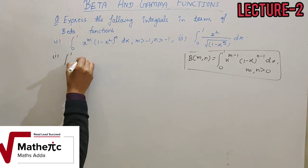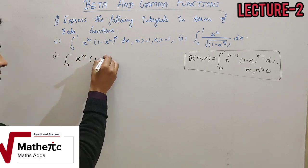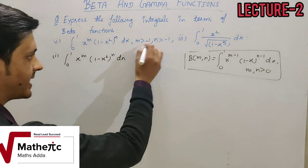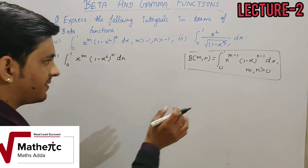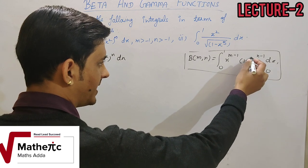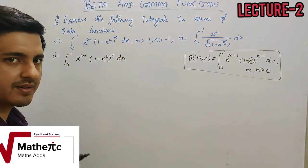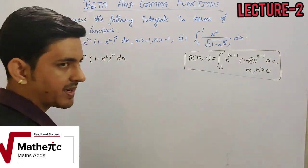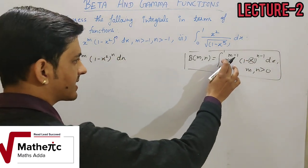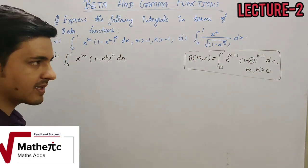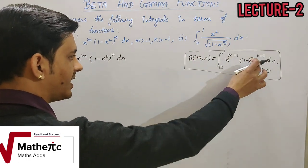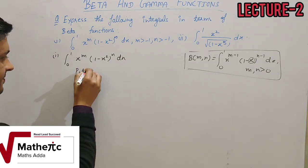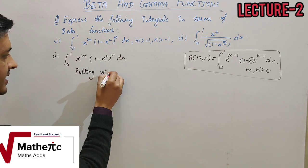The first integral is from 0 to 1 of x^(m-1) · (1-x²)^(n-1) dx. Here, the second term has x² instead of x to the power 1. To convert x² to power 1, we put x² = y as substitution.